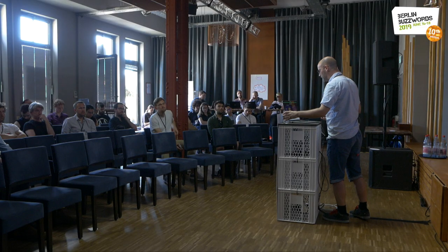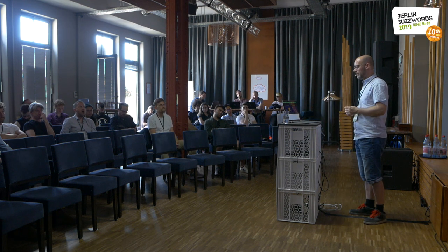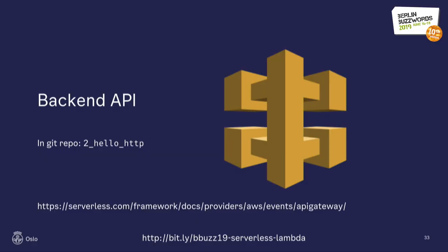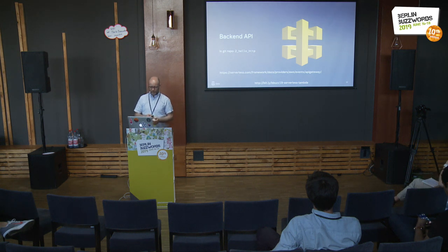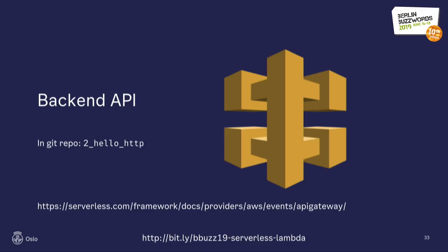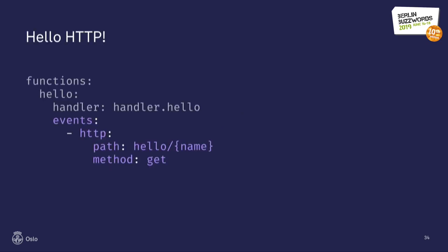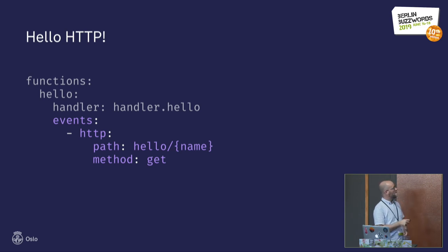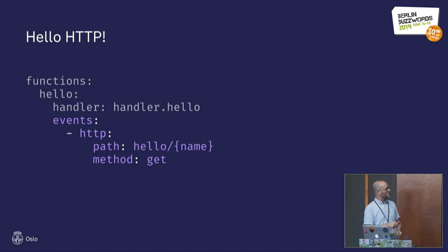Let's look at how we can extend our simple hello function with a REST API by putting API Gateway in front of Lambda. There's a bunch of documentation on the Serverless Framework web page. Essentially, we extend the serverless configuration by defining what events will trigger our function. We set up an HTTP event with a path and a method — fairly simple. We can also have path parameters, query parameters, and headers.